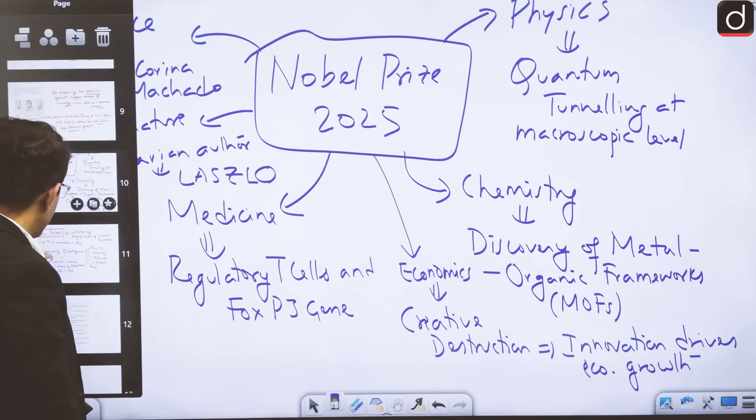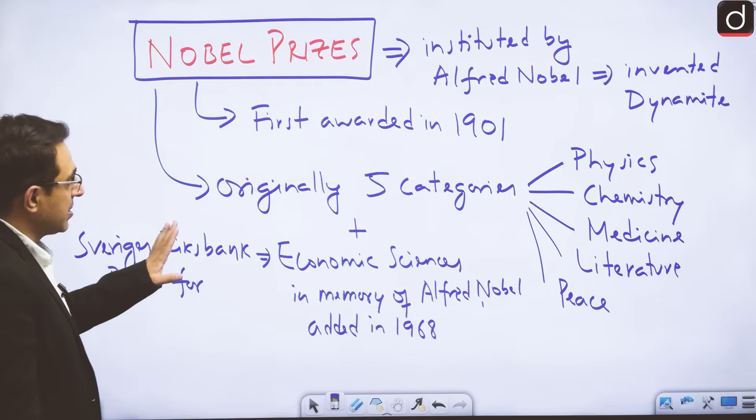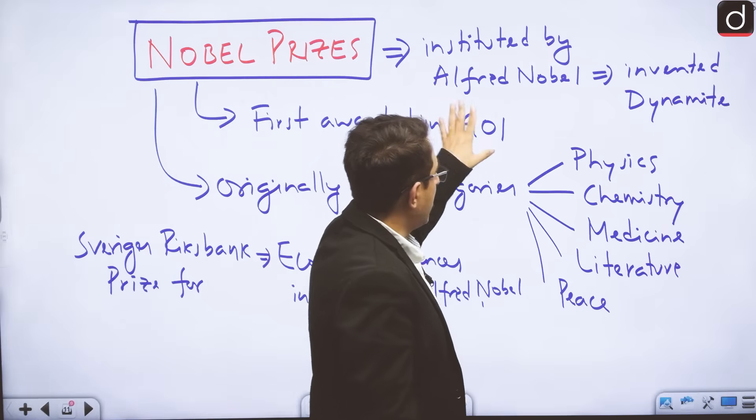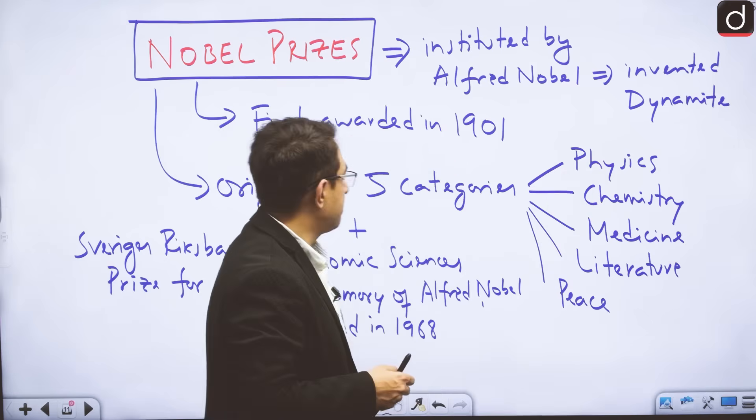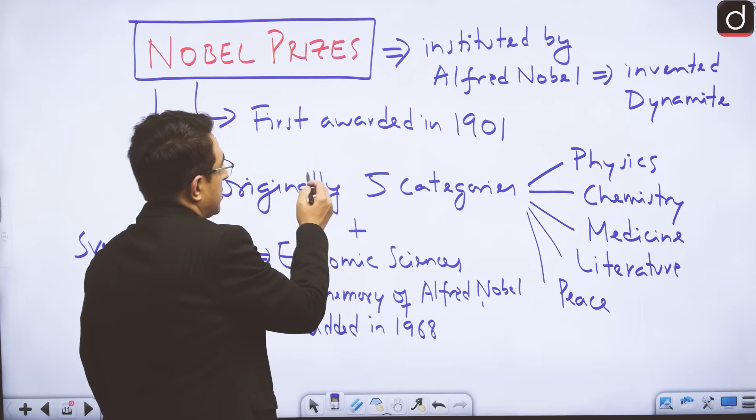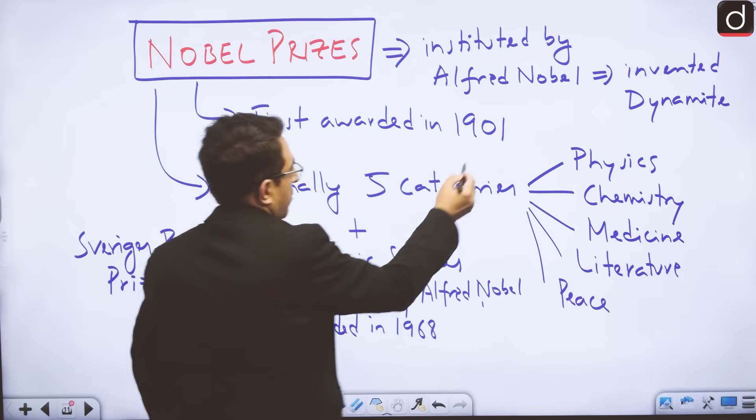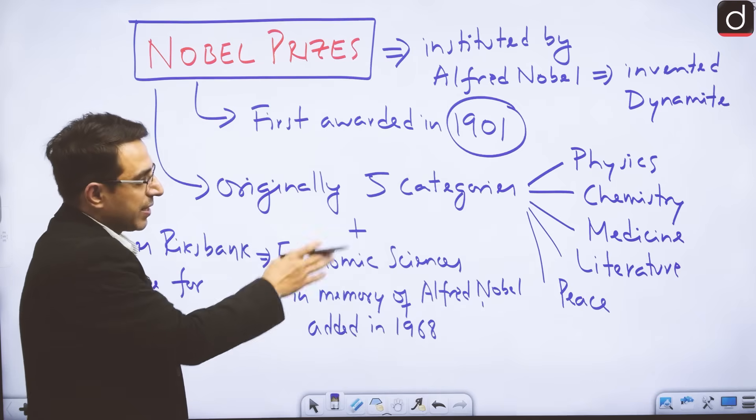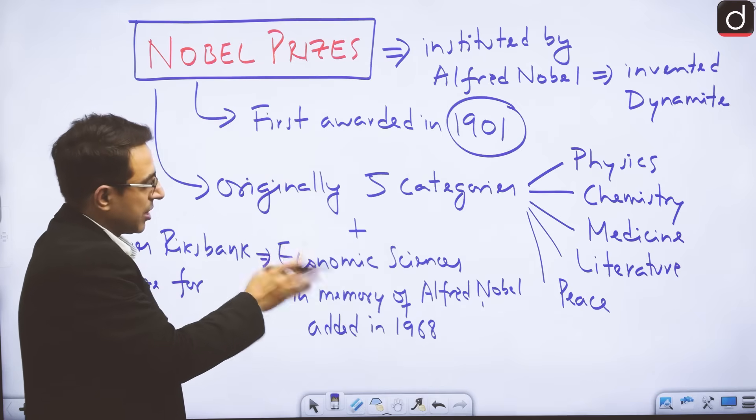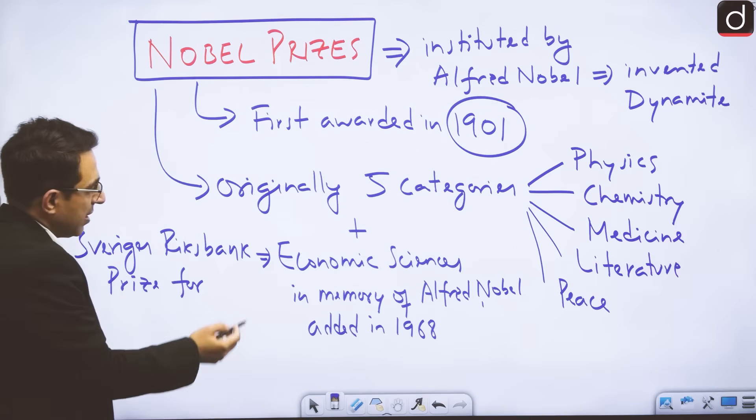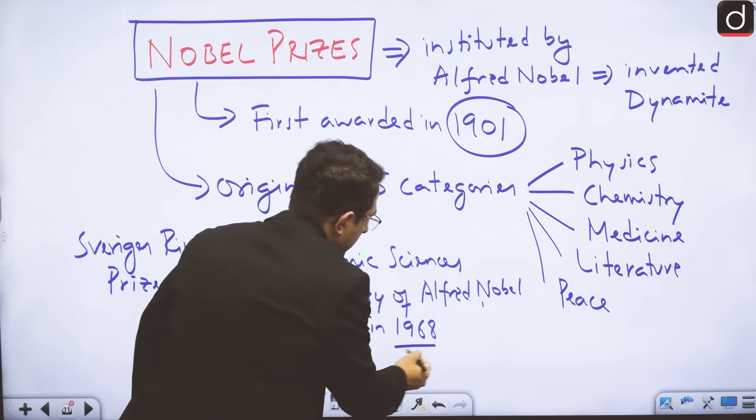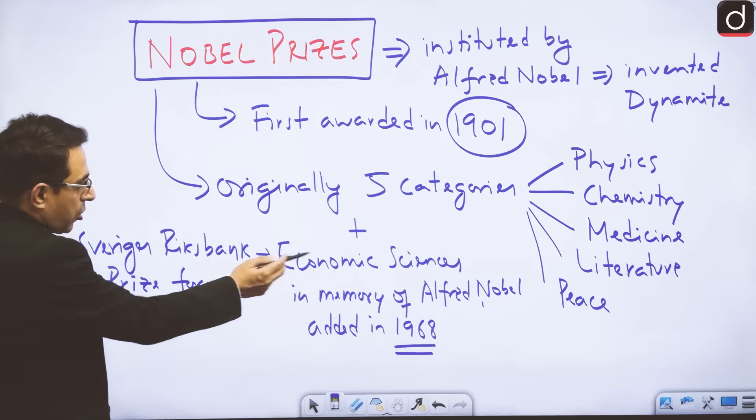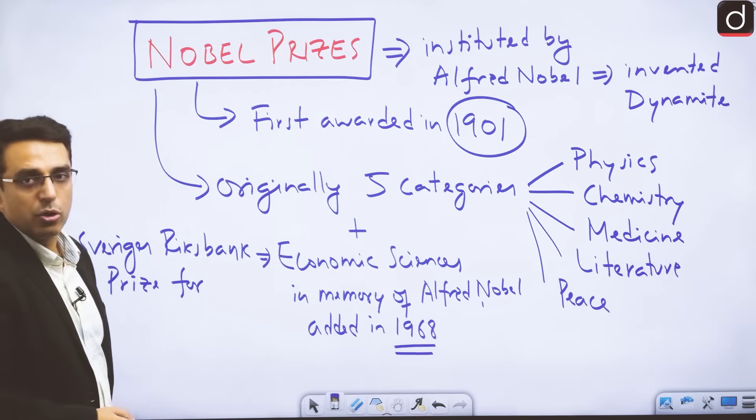One final thing that we need to know about Nobel Prizes is it was instituted by Mr. Alfred Nobel, who is the inventor of dynamite. The first awards were given from 1901. Originally five categories were there: physics, chemistry, medicine, literature, and peace. Finally, in 1968, another category, the sixth category was added, which is the Sveriges Riksbank Prize for economic sciences in memory of Alfred Nobel.